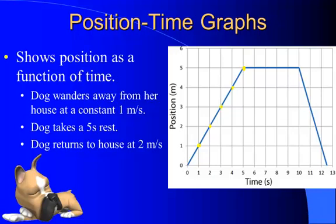Now the dog decides she's tired and takes a rest for five seconds — she lays down, takes a nap. Over those five seconds, position doesn't change; it remains constant because the dog isn't moving, so the velocity of the dog is zero. Then the dinner bell rings, the dog gets excited and comes flying back. In two and a half seconds the dog moves at two meters per second, covering two meters every second until it gets back to its starting point.